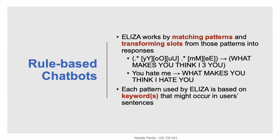The way ELIZA does this — and more generally the way all rule-based chatbots work — is by matching patterns in the input and then transforming slots from those patterns into responses. For example, we might have a pattern searching for the word 'you,' followed by anything, followed by 'me.' When that pattern is matched in a user's input, we transform it into 'what makes you think I [blank] you,' where blank refers to whatever appeared between 'you' and 'me' in the original text.